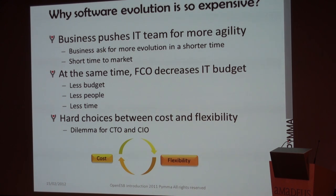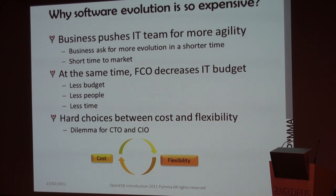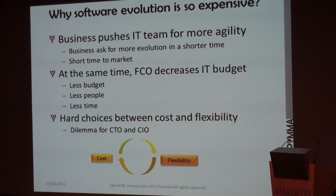The cost of evolution is a very big problem for IT management. Why? Because the business has a lot of new needs. They need a very short time to market — they want projects going to production very quickly — and this requires lots of evolution and maintenance. On the other side, the activity rate decreases and you have fewer people and less time to do things. It's a big problem for CTOs and CIOs because they have to choose between cost and flexibility.